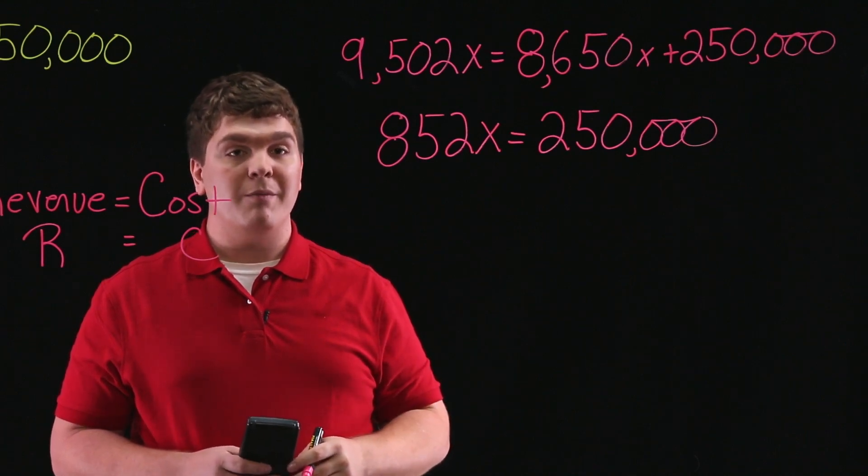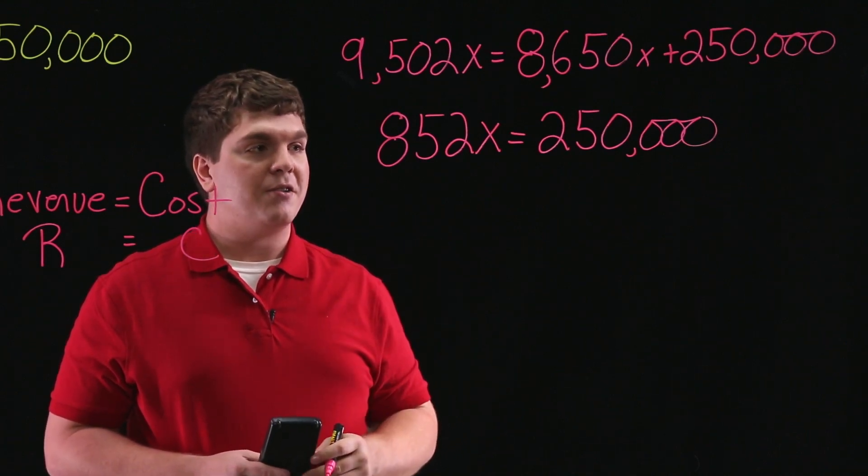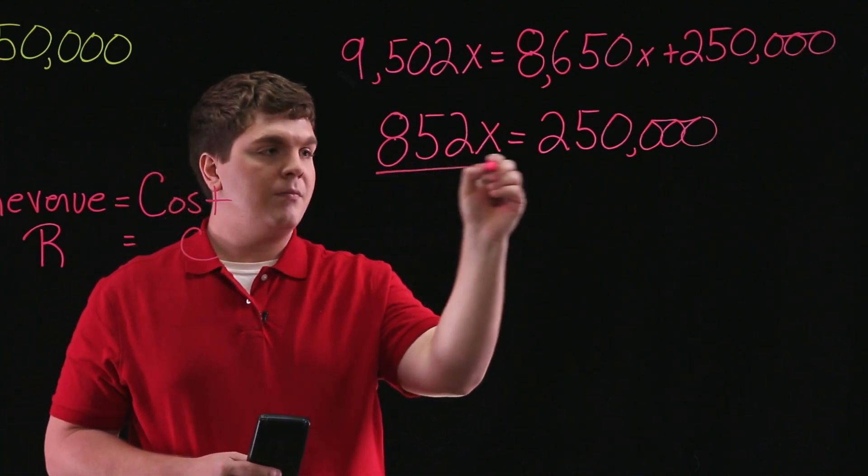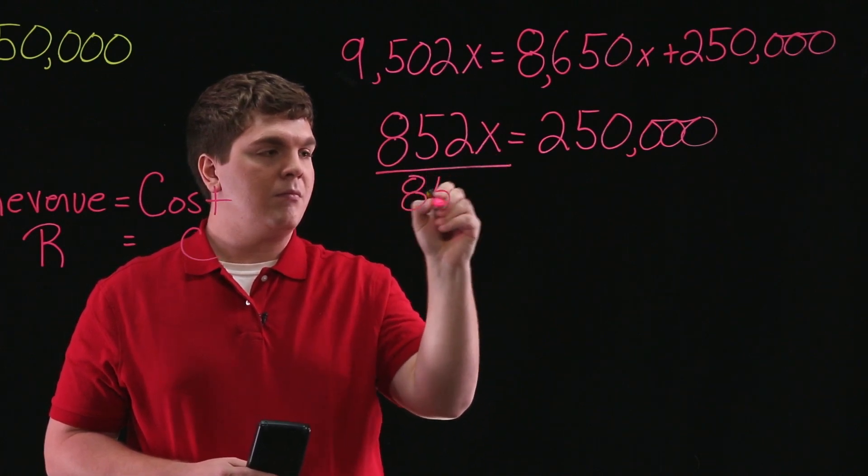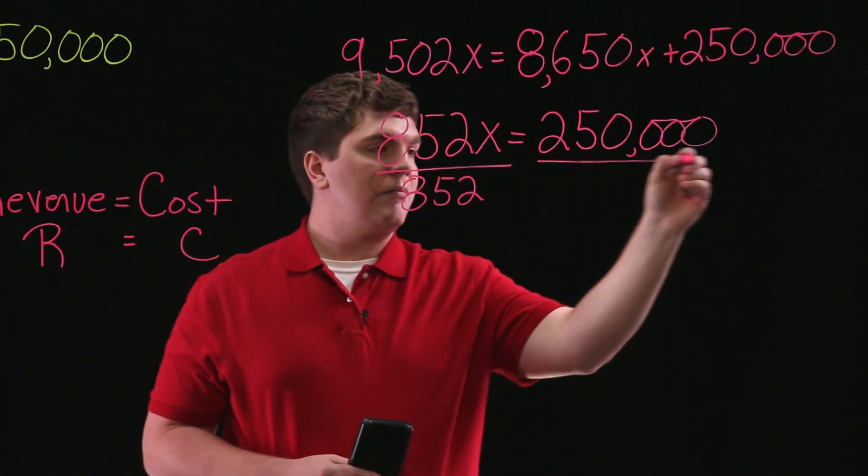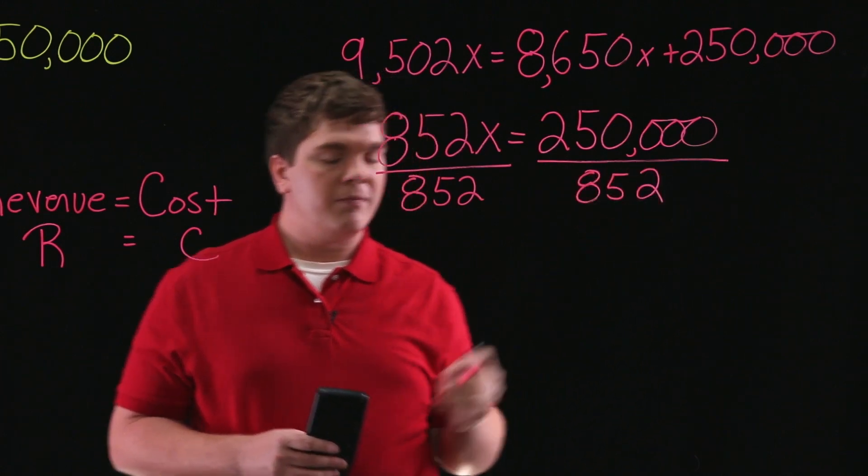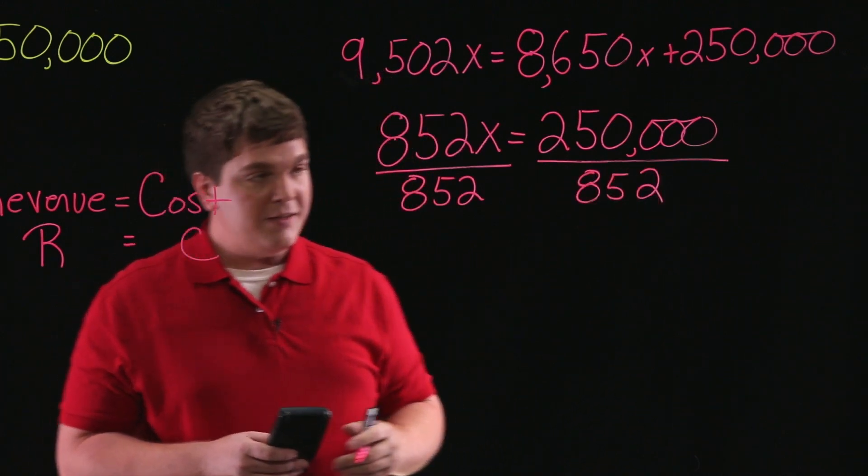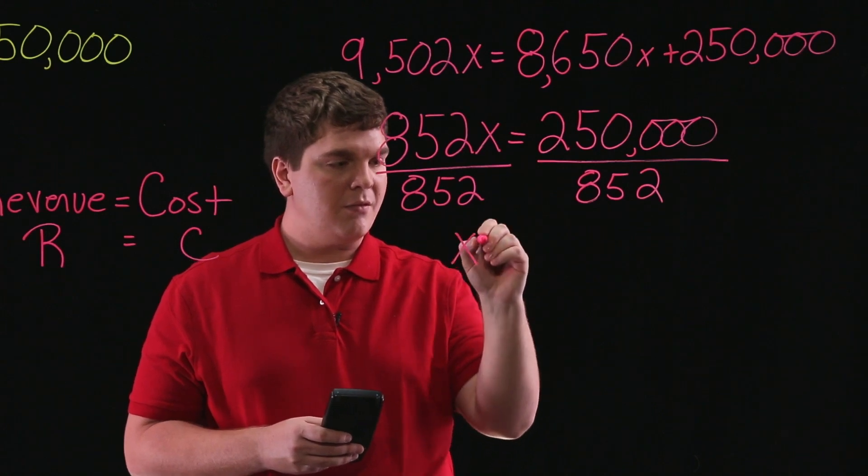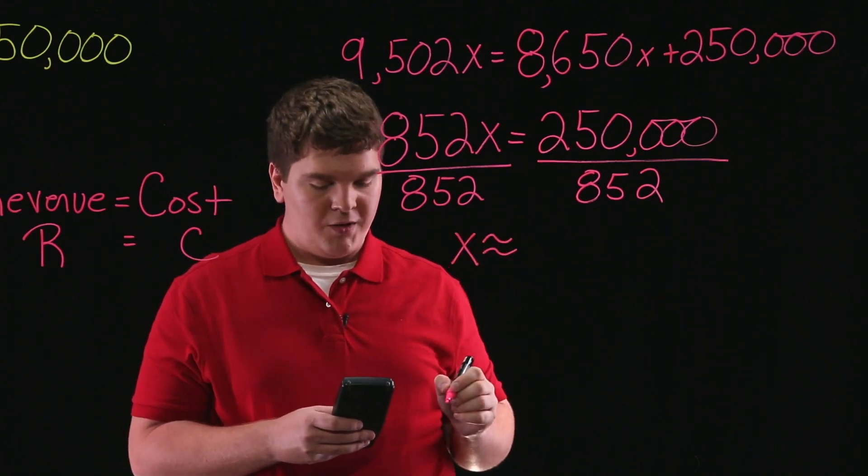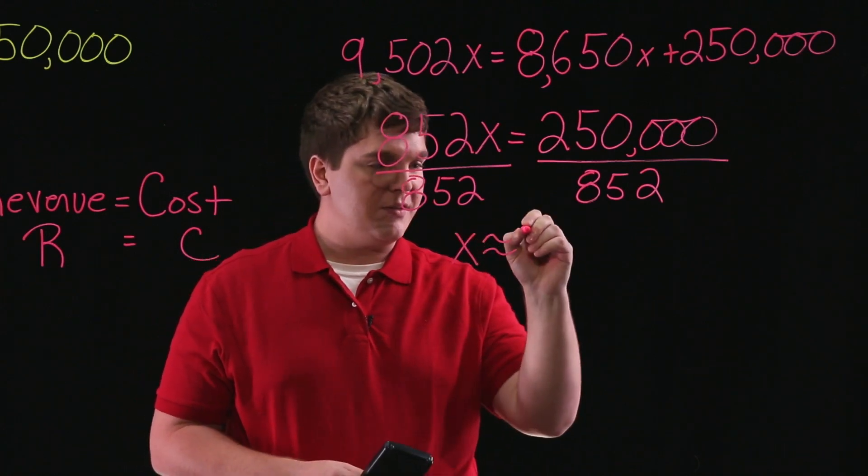Now we can solve for x by dividing both sides of the equation by 852. This leaves us with x is approximately 293 units.